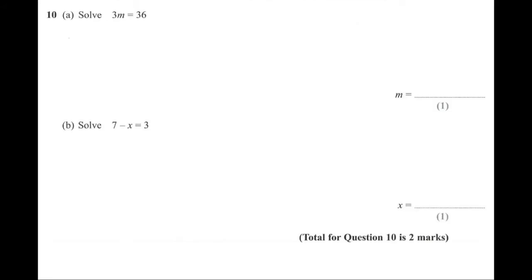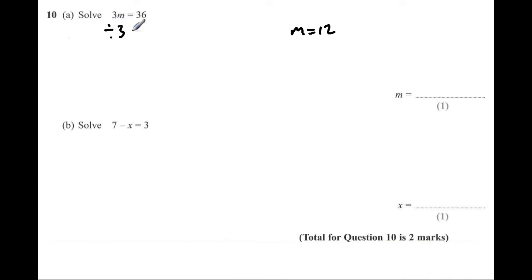Question 10A. Solve 3M equals 36. There are two ways to answer this. First, ask what you need to multiply 3 by to get 36 — the answer is 12. The second way uses the inverse operation: since we have 3 times M, divide both sides by 3 to isolate M. So M equals 12.